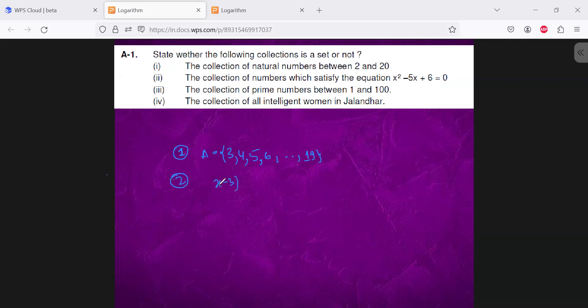So this is x minus 3 into x minus 2. This goes to 0. So x will be 2 and 3. So this is also a set with a finite element.